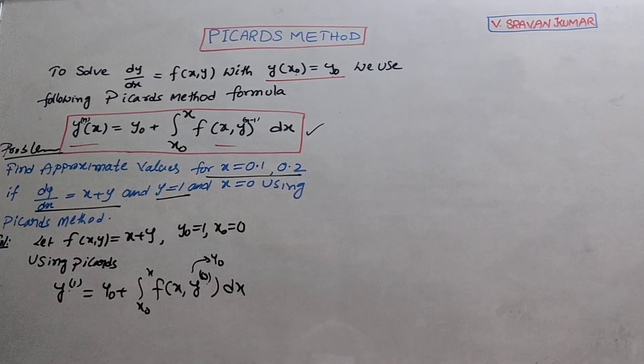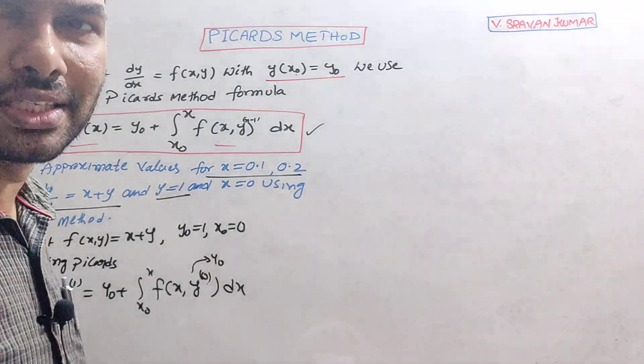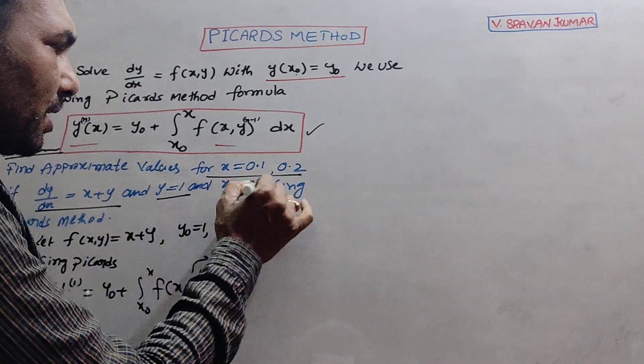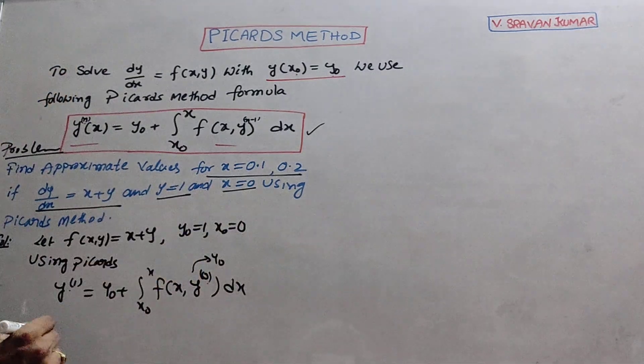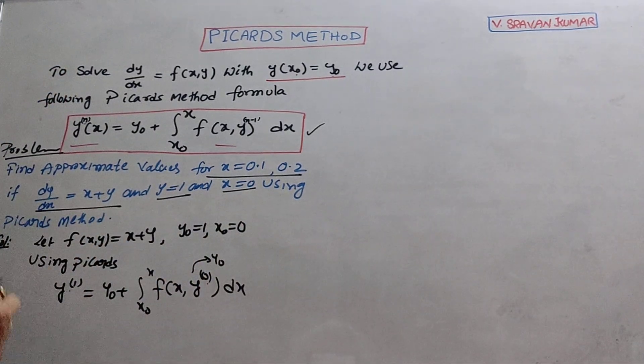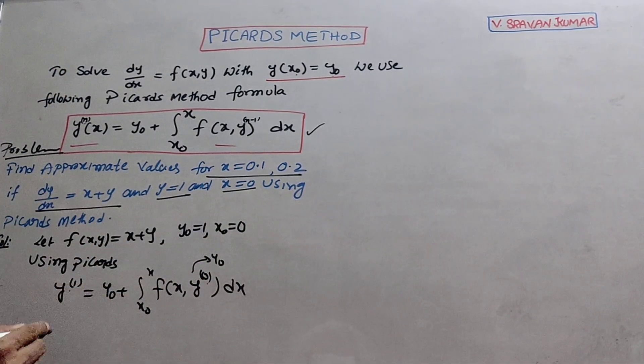Initial condition is given indirectly: y equal to 1 means y₀ = 1, x equal to 0 means x₀ = 0.